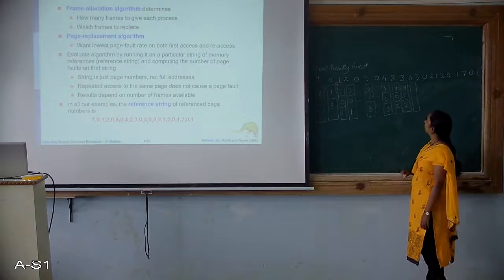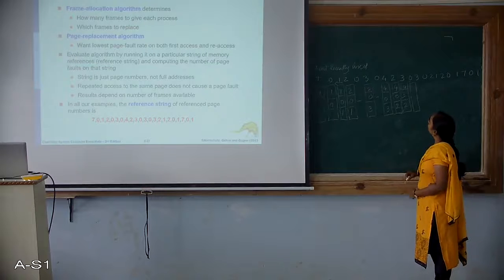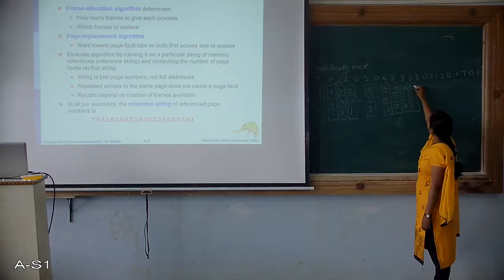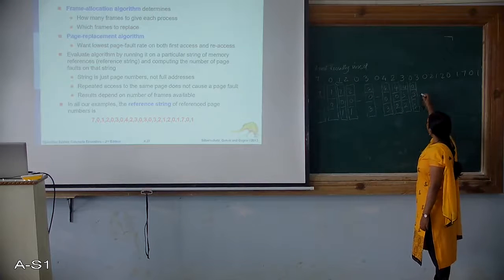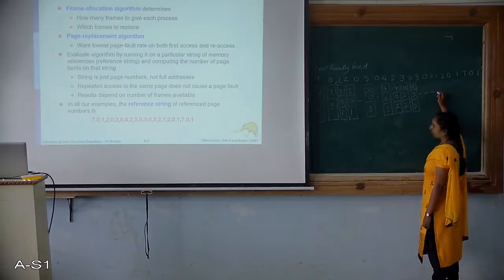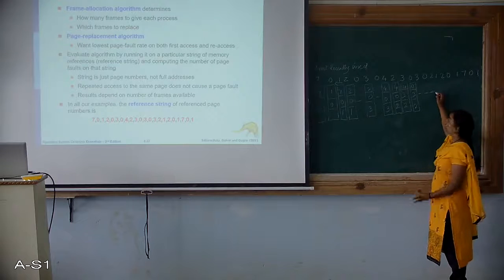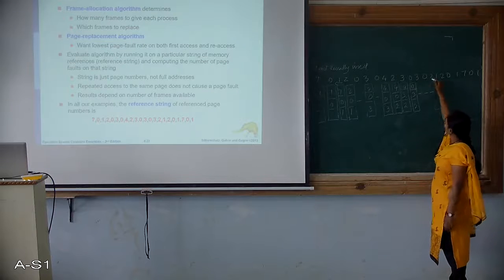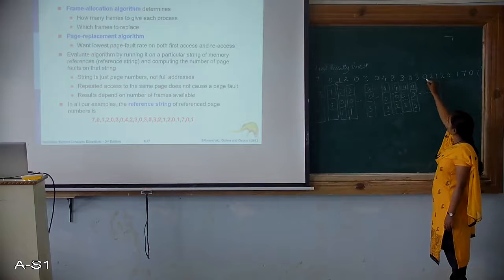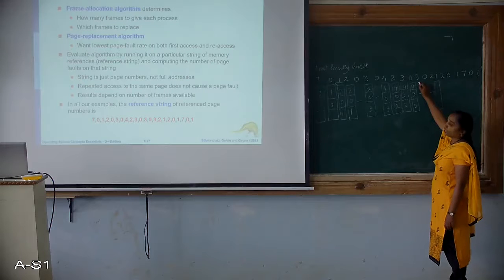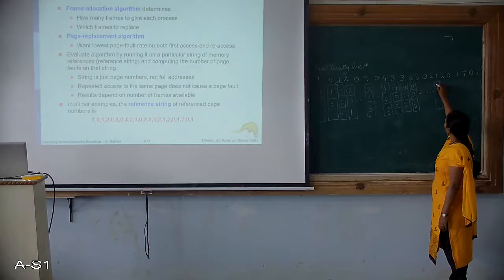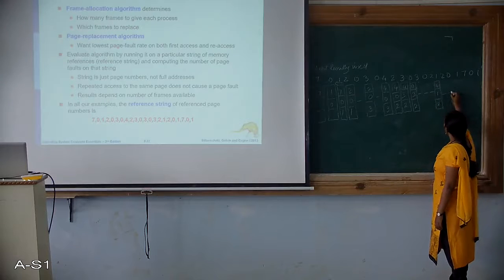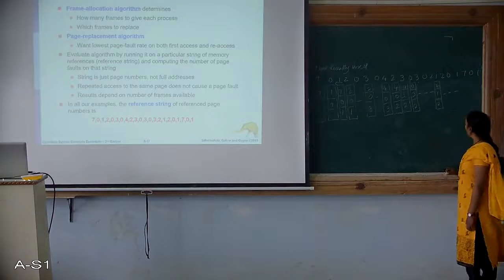Next 0 is required — remove the page farthest in the past. 2 and 3 were used recently, so 4 is the farthest. Replace 4 with 0. Frames: 3, 0, 2. 3 is present, 0 is present, 2 is present — no page faults here. 1 is required — not in frame. Which is least recently used? 2 is recently used, 0 is recently used, 3 is not recently used. Replace 3 with 1. Frames: 0, 1 and 2. 2 is present, 0 is present, 1 is present — no page replacements required.